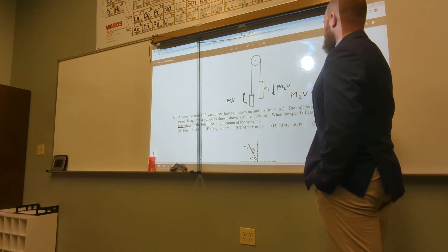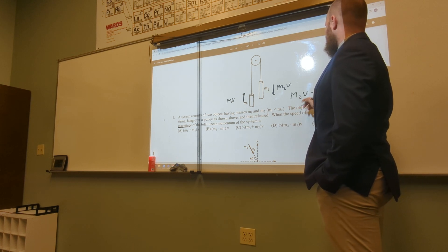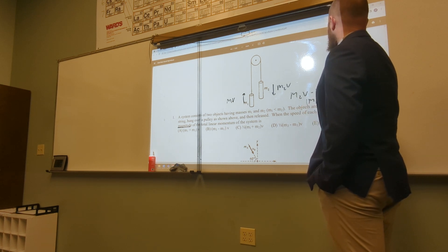So I'll have M2V minus M1V. I'll factor out V, so I'll have M2 minus M1 times V.